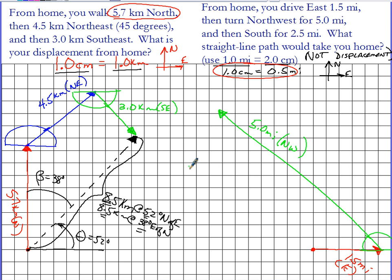And then finally, the last vector I'm going to draw is straight down. 2.5 miles would be 5 centimeters this way. And so 2.5 miles south.